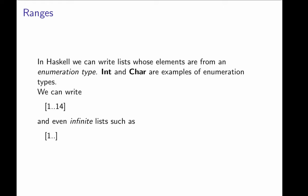That's provided that the elements of the list are from an enumeration type. Two enumeration types in Haskell that are well known, or should be well known, are int and char. So if we want to write the list of integers from 1 up to 14, all we need to do is write [1..14] in brackets.